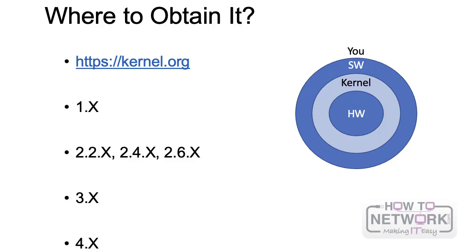From version 1 to version 2, Linus Torvalds decided to shift basically because of timing. He noticed that Linux in its first version 1.x was an operating system trying to grow and become accepted by the IT community. When he realized it was starting to get widely adopted, he decided to release version 2.